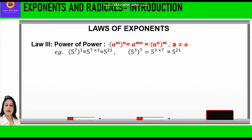The other way round, 5 raised to power 3, whole raised to power 7, is also equal to 5 raised to power 21. So in both cases, whether we take 7 or 3 as the inner power, we multiply the powers.